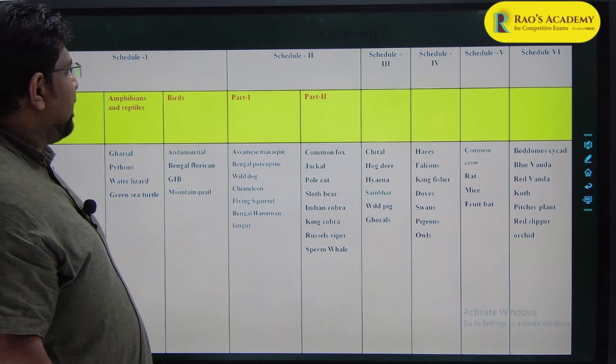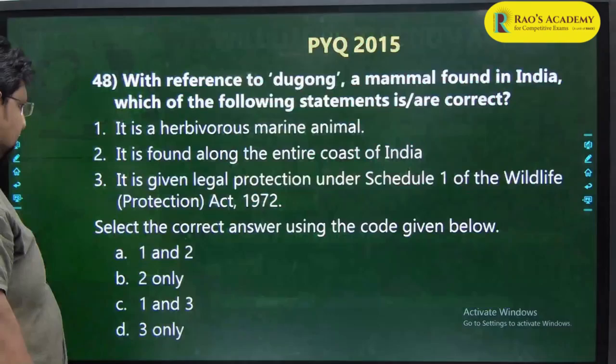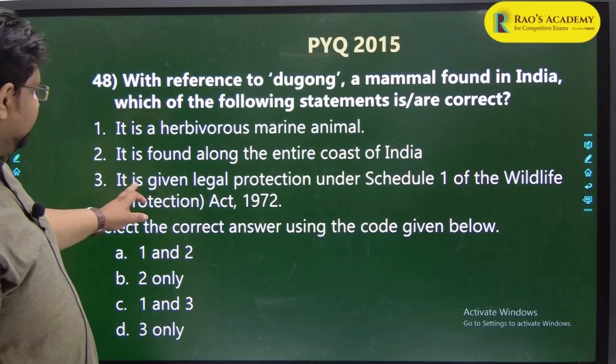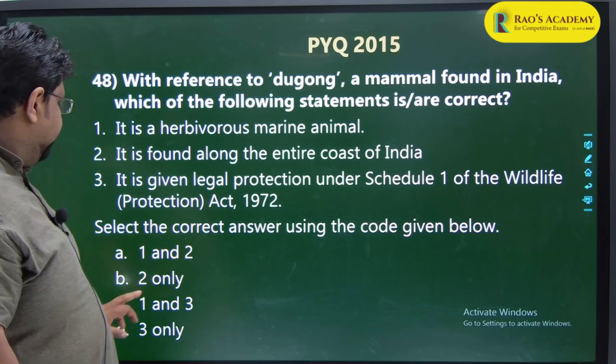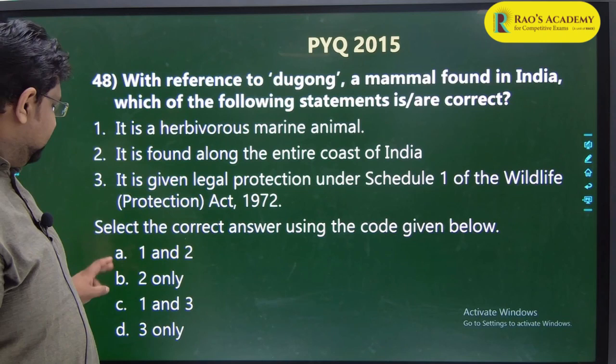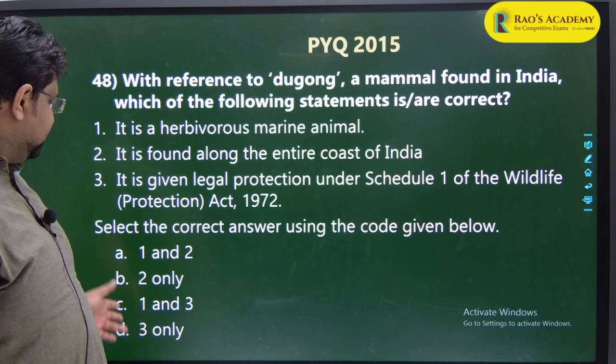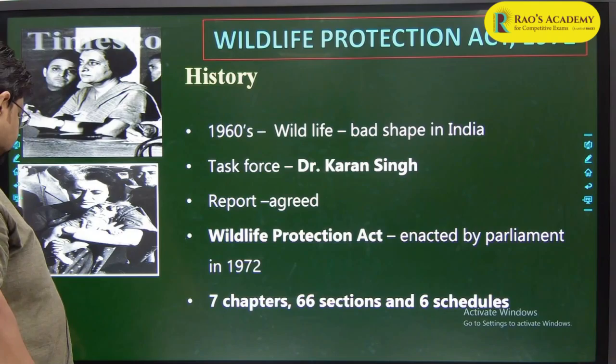Looking back at the dugong question - even if you know nothing about the animal, if you know it is under Schedule 1 of the Wildlife Protection Act 1972, you can eliminate options A and B straight away, leaving 1 and 3 and 3 only. And if you know it is a herbivorous animal, you can easily reach the conclusion. That was 2015.